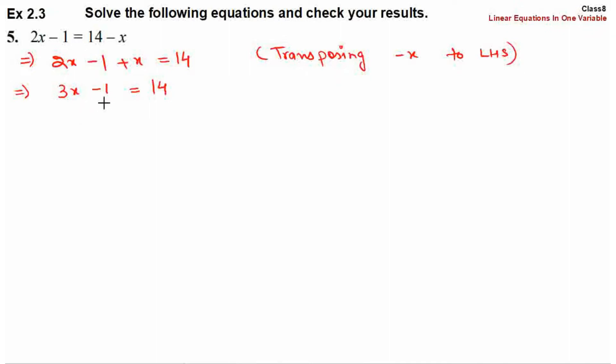Now the minus 1 is on the left hand side. We will shift it to the right hand side. So 3x equals 14. Minus 1, when it goes to the right hand side, becomes plus 1.